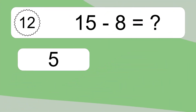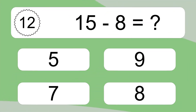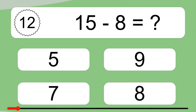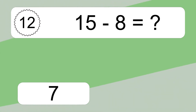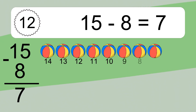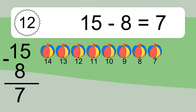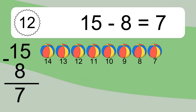15 minus 8 equals what? 15 minus 8 equals 7. Let's count it: 14, 13, 12, 11, 10, 9, 8, 7.